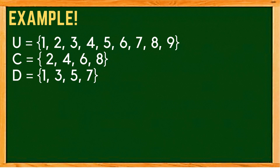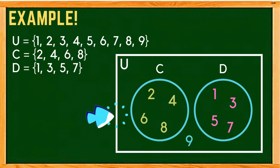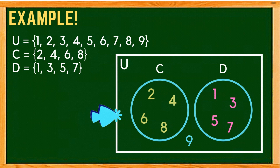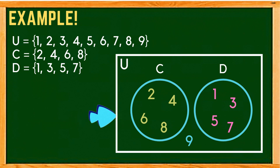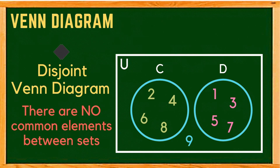Let us try to represent it using the Venn diagram. This is the illustration of the given sets. The elements of set C are written inside the circle of set C, and the elements of set D are written inside the circle of set D. The remaining element in the universal set but not in set C or D is written outside both circles. As we can observe, the two circles are separate, so we call this a disjoint Venn diagram, because there are no common elements between set C and set D.